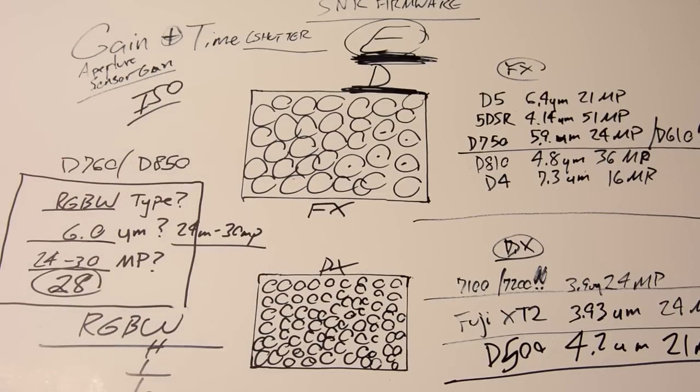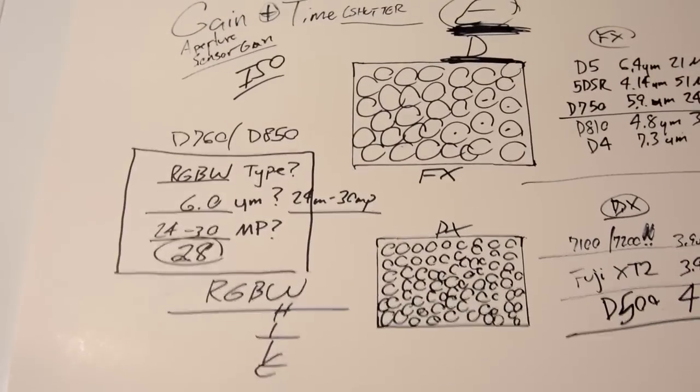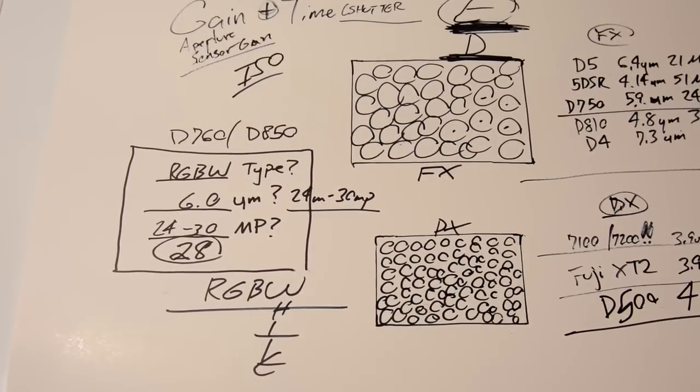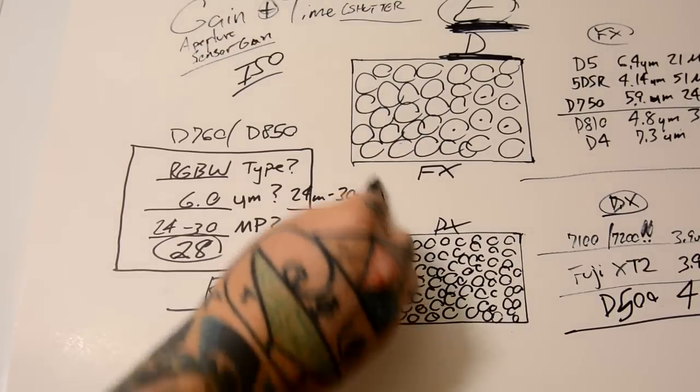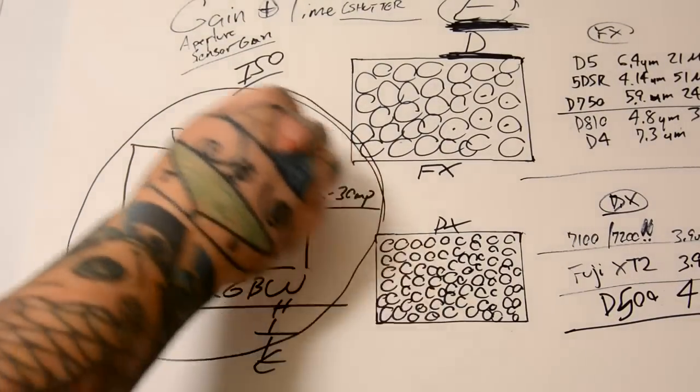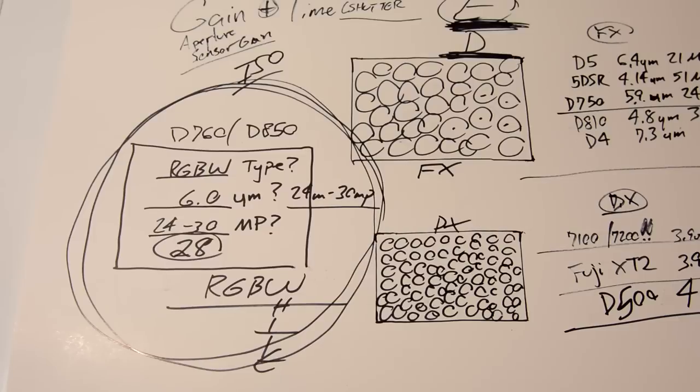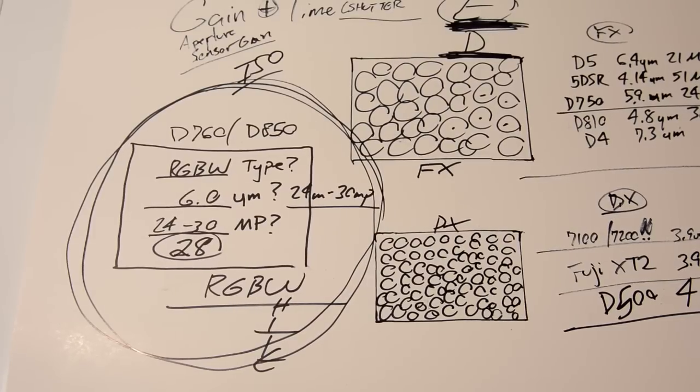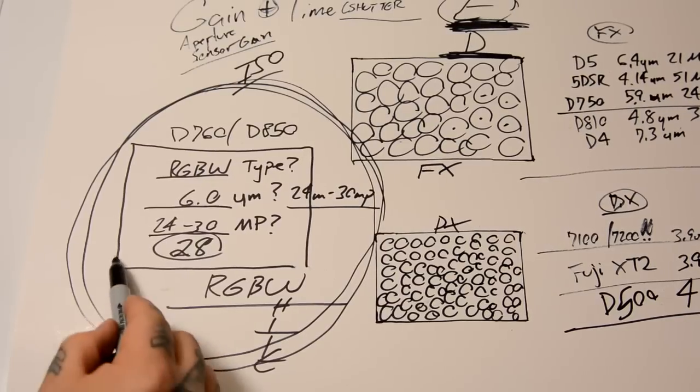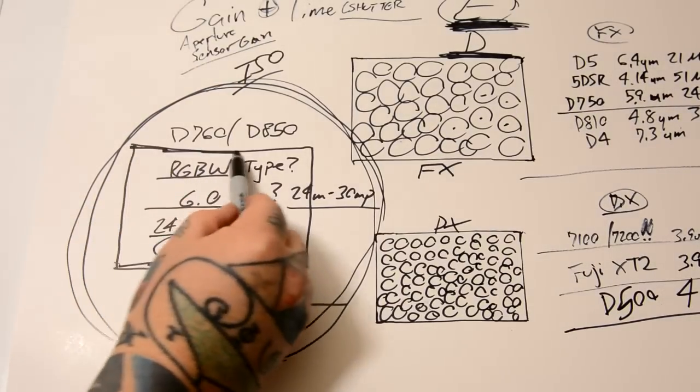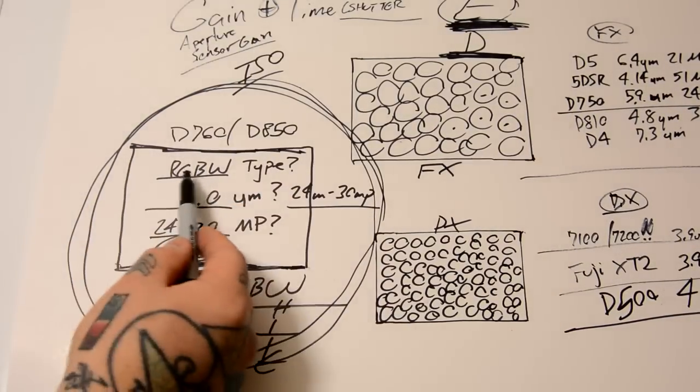And this is going to be, right here, the new sensor on the Nikon D750 slash D820. I don't know what the hell they're going to call it. It could be the D820. It could be the D900. It could be the D... He knows what it's going to be called. That I don't know. I do know, however, it will have these parameters right here.